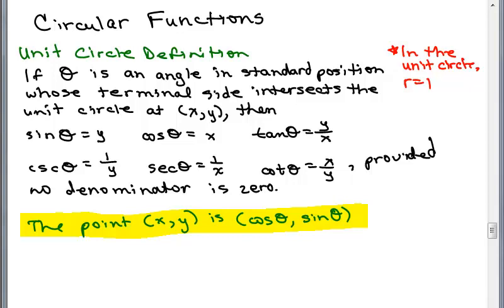In this video, we're going to introduce what we call the circular functions. It's very much related to the unit circle definition for the trig functions, which we did in the previous videos. That says if we have an angle in standard position whose terminal side intersects the unit circle at (x, y) — remember unit circles have a radius of 1 — then the sine of the angle is y, the cosine of the angle is x, et cetera.